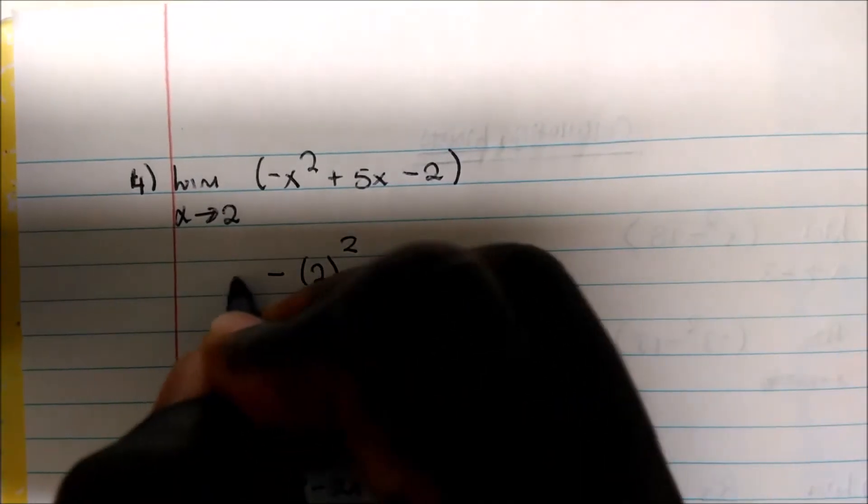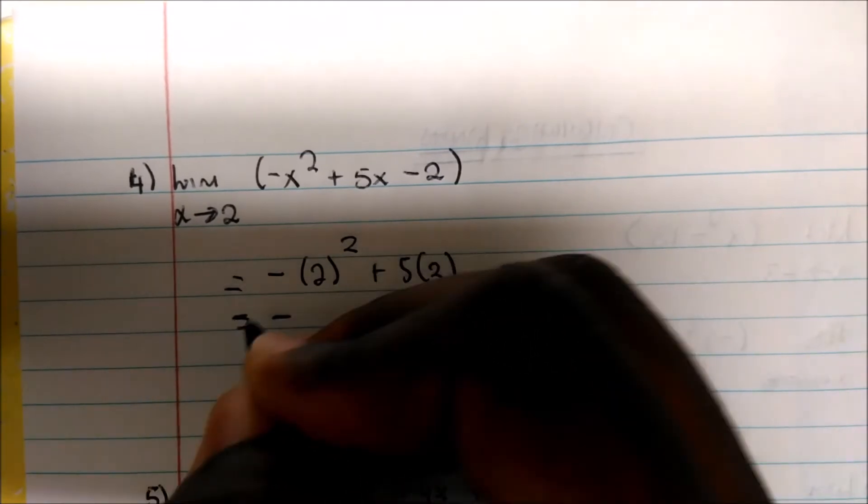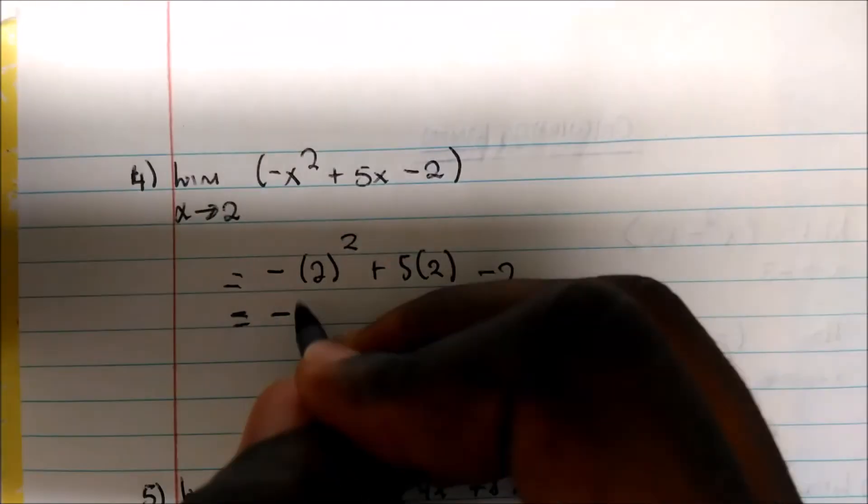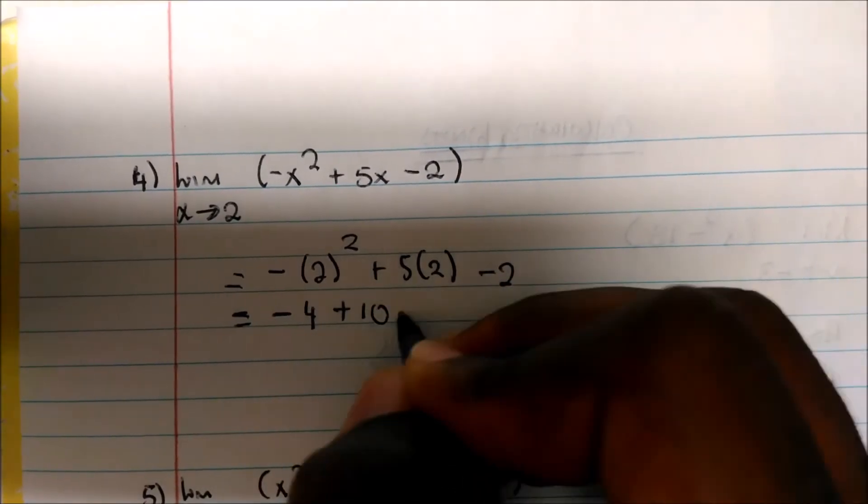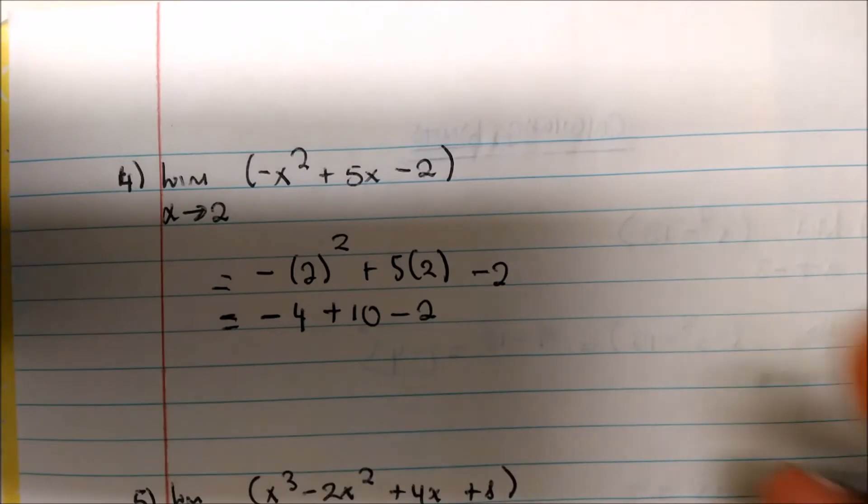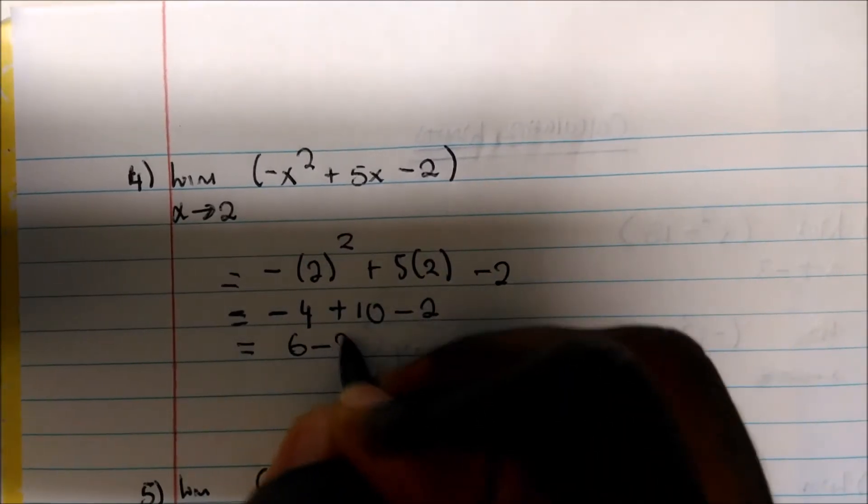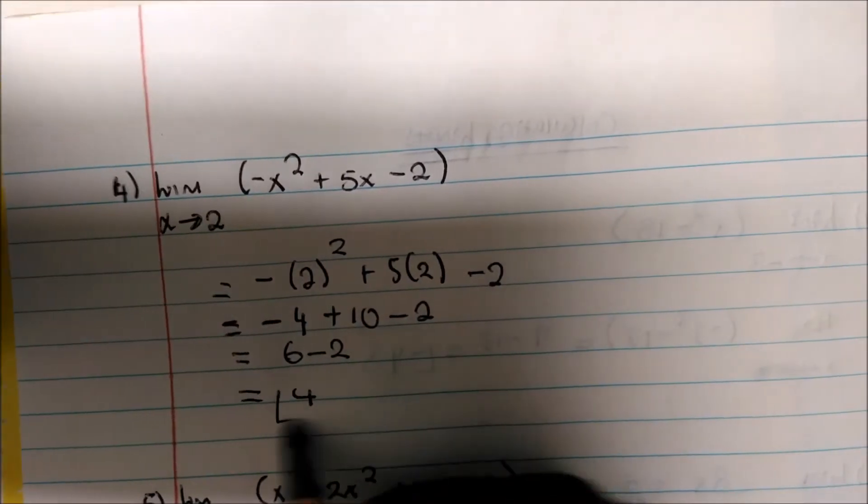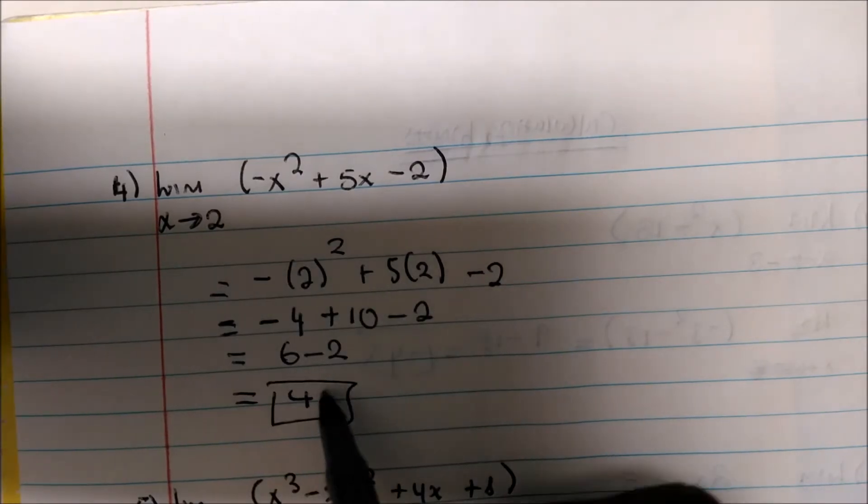Doing the arithmetic. This is going to be negative 2, so this is a negative on the outside because, remember, this is not with the negative 2. You're plugging 2 in for x. So negative 4 plus 10 minus 2. So negative 4 plus 10 is 6 minus 2, which is 4. So the limit is actually 4. So as x approaches 2, the y value is actually approaching 4.